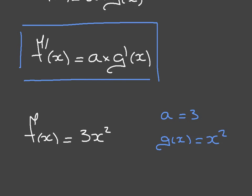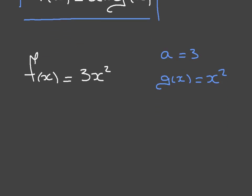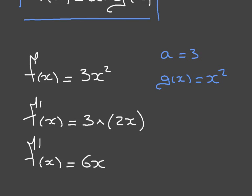And so what the constant rule is telling us is that if we want to differentiate f of x, then f dash of x is equal to 3, that was a, times g dash of x, so in this case, 2x. And that leads us to the answer f dash of x is equal to 6x. And there we have it. We've just differentiated this function using the constant rule.